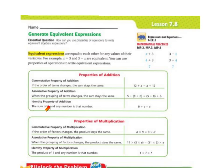The identity property of addition states that the sum of 0 and any number is that number. So 0 plus c equals c.